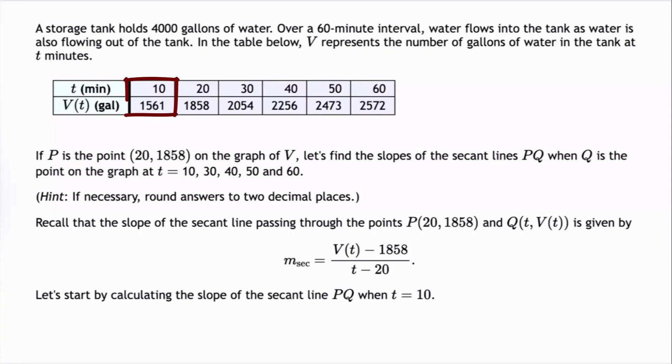When T is 10, V(T) is 1,561. When T is 20, V(T) is 1,858. When T is 30, V(T) is 2,054. When T is 40, V(T) is 2,256. When T is 50, V(T) is 2,473. And when T is 60, V(T) is 2,572. If P is the point (20, 1,858) on the graph of V,